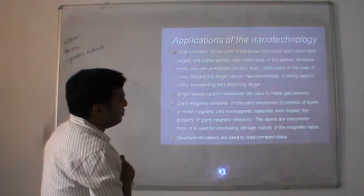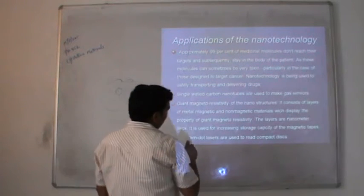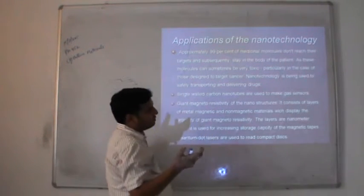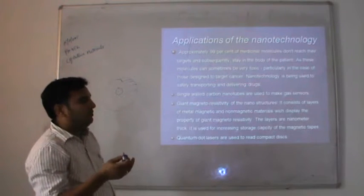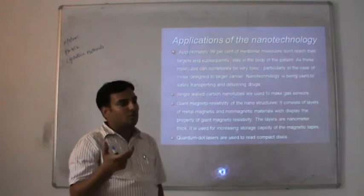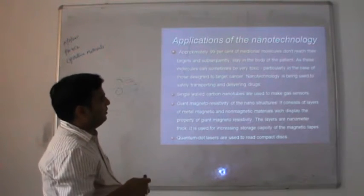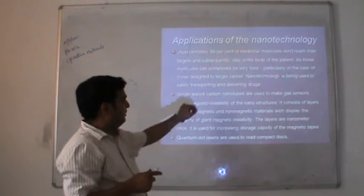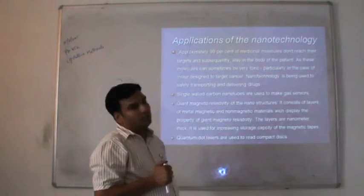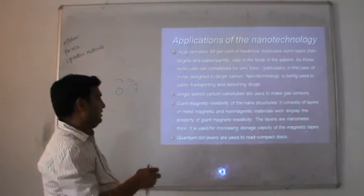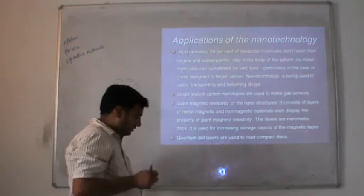Single-wall carbon nanotubes are used to make gas sensors. Carbon nanostructures, in the form of carbon nanotubes, are made from the rolled structure of carbon and are used to make gas sensors. This is very useful for the data industry.